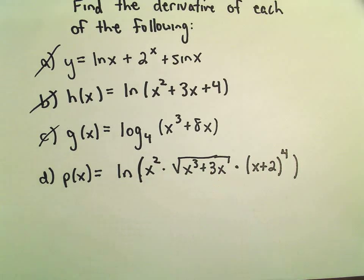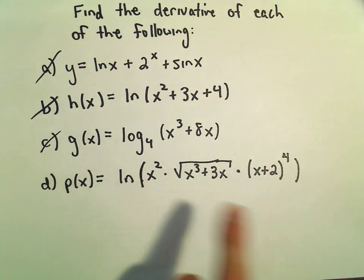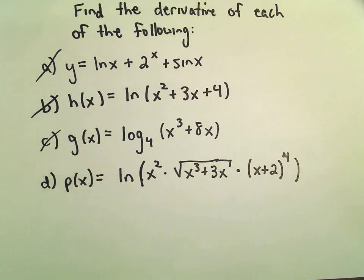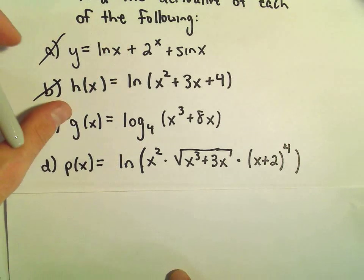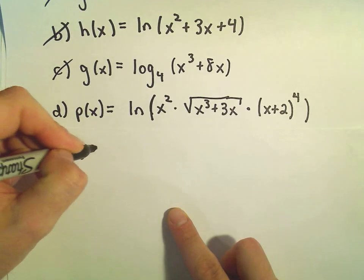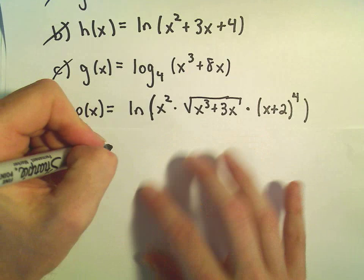But then I would have to use the product rule a couple times and the chain rule a bunch. And to simplify that down might be a big old mess. But what we can use is our properties of logarithms. Recall, if we have multiplication inside of a logarithm, we can break that up as addition.